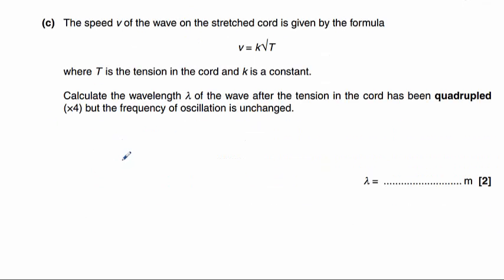Part c introduces an equation for the speed of a wave on a stretched cord: v equals k times the square root of capital T, where the capital T here, note, is not time period as it would normally be, but is tension. This is not an equation you'll have come across before. It's been introduced in this particular exam paper, and you shouldn't be afraid of it. We need to calculate the wavelength of the wave after the tension in the cord has been quadrupled, but the frequency is unchanged.